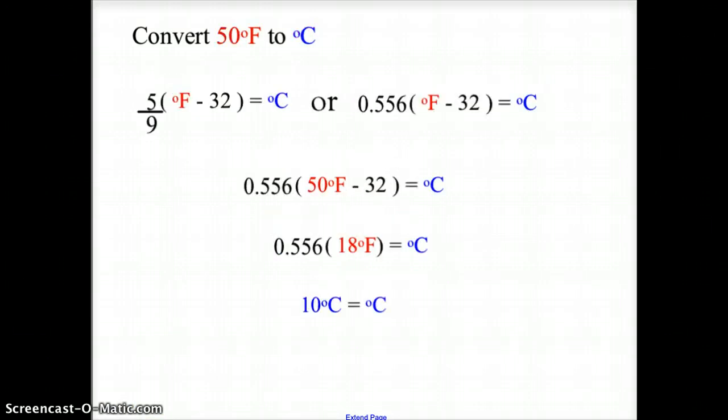Now if we take 50 degrees Fahrenheit and convert it to Celsius, we plug the 50 degrees Fahrenheit in, subtract 32, which gives us 18 degrees Fahrenheit, then multiply that by 0.556, which gives us a value of 10.008, which we're going to simply round to 10 degrees Celsius.